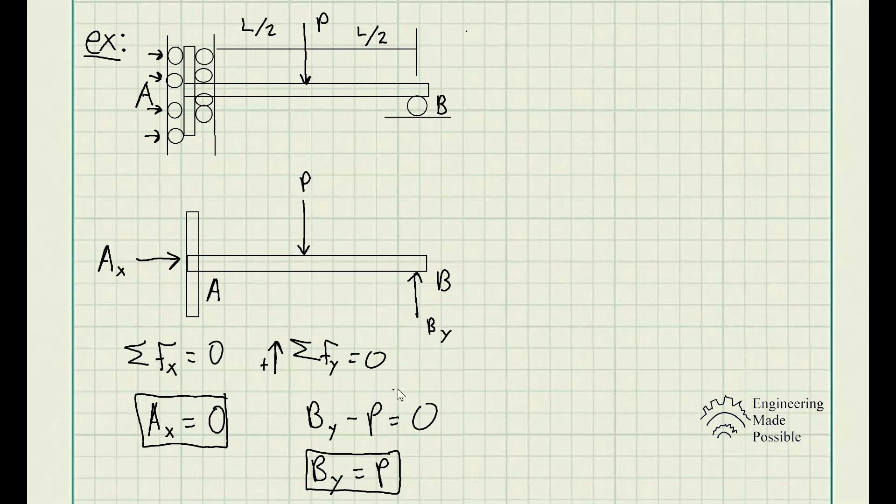One thing to keep in mind is when we do the sum of moments with respect to point A. The sum of moments must be equal to 0 counterclockwise, let's say it's positive in this case. We have the P force having a moment making it go clockwise with respect to A. So that's going to be a negative moment, negative P-L divided by 2. Then we have B-Y actually causing a moment that's counterclockwise. So that's going to be positive plus B-Y, which essentially is P times the distance that's perpendicular, which is L.